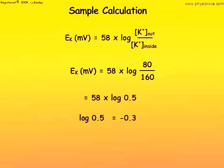Log to the base 10 of 0.5 equals minus 0.3. Therefore, the potassium membrane potential equals 58 times minus 0.3, which equals minus 17 millivolts, with the outside of the cell being positive.